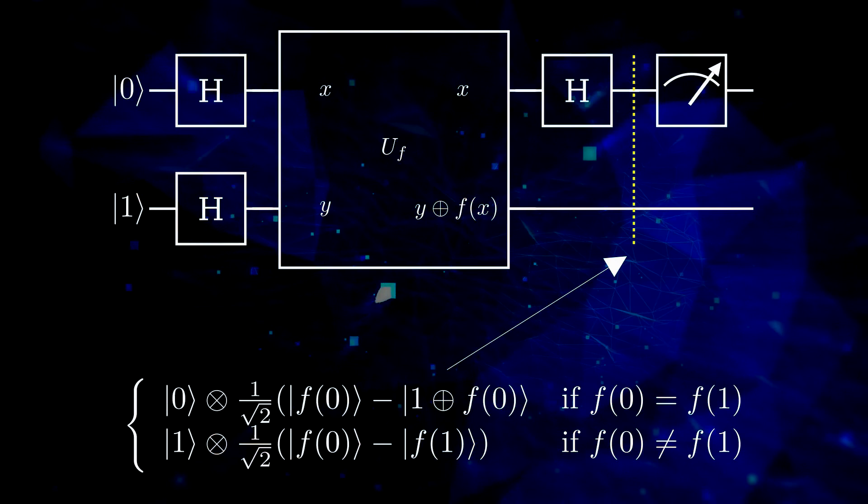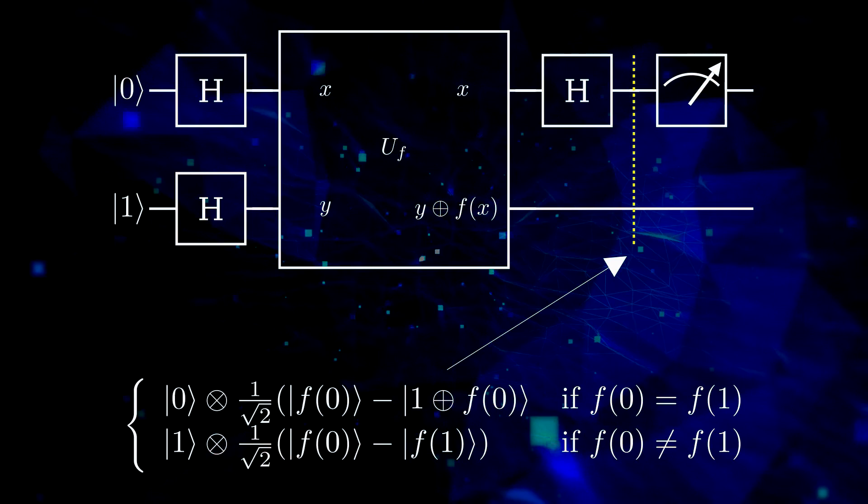Which has the property that if f is constant, the first wire always carries the zero basic state. And in the other case, always the one basic state.